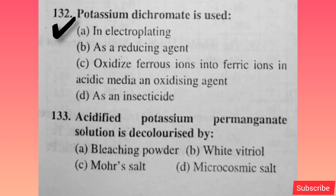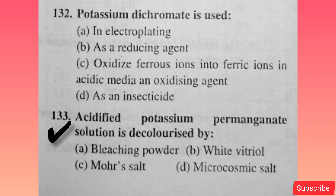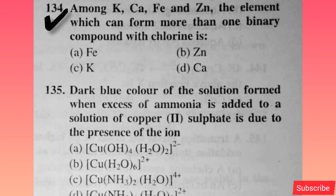Potassium dichromate is used — option C is correct. Acidified potassium permanganate solution is decolorized by Mohr's salt — option C is correct. Among K, Ca, Fe, and Zn, the element which can form more than one binary compound with chlorine is — option A is correct.